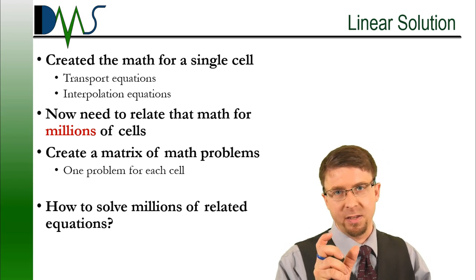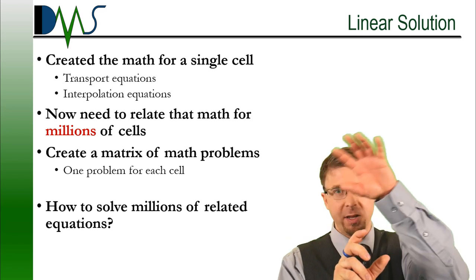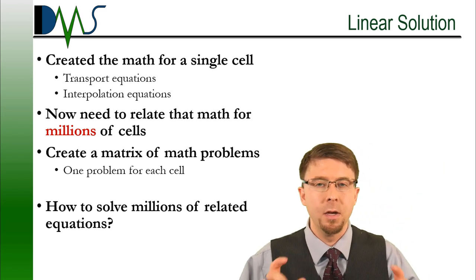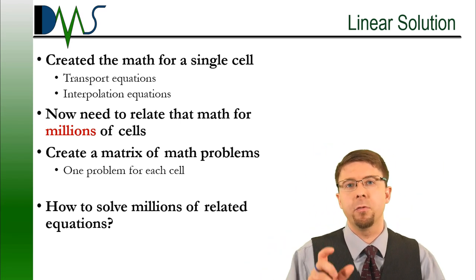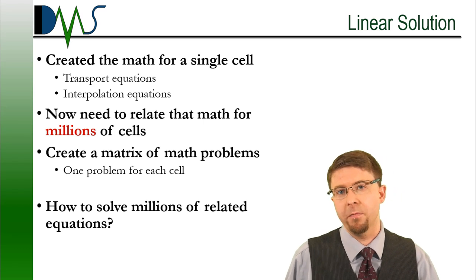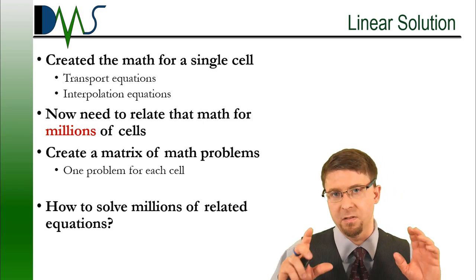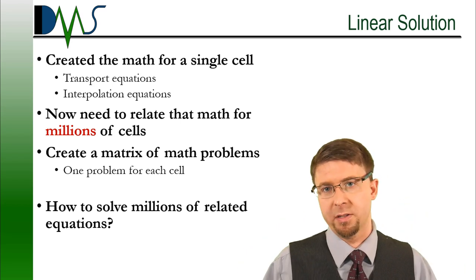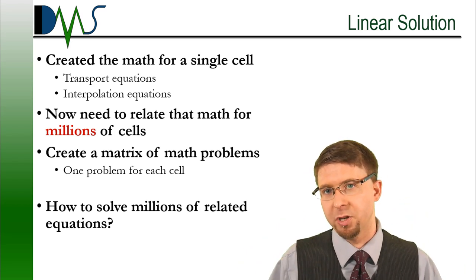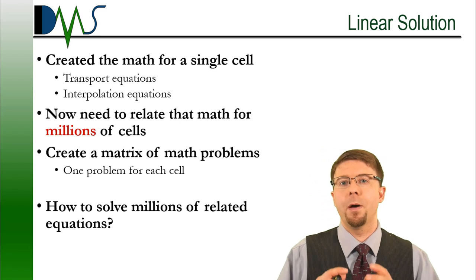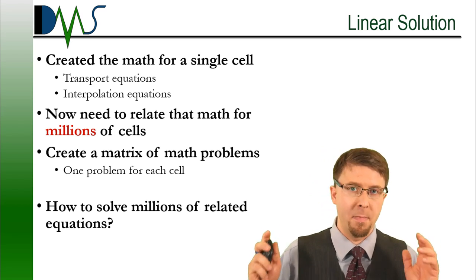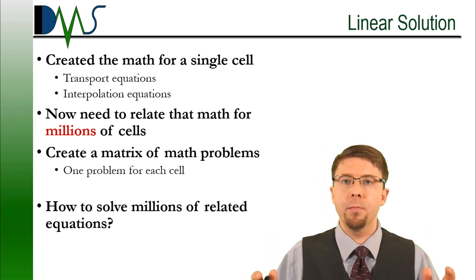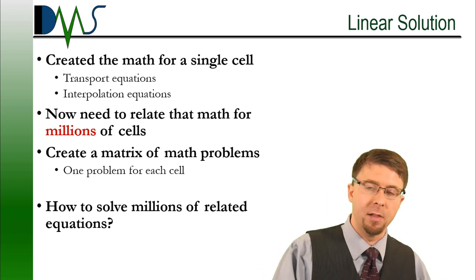Now, that's the part we're going to address. We've had that math for that single cell, and for the moment we've just been ignoring all these neighboring cells. We're going to now take that math for its single cell, and replace it for math with millions of cells. We're going to solve all of these cells at once, and address all of those relationships at once. We're going to create a matrix of interrelated math problems. One problem for each cell in our mesh.